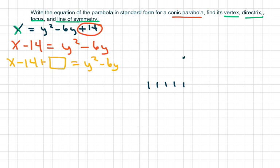You should know basically that when you complete the square you take half of that, square it, and you get 9. So you're adding 9 to both sides and I combine this, I get x minus 5 equals y minus half of 6 is 3 squared.